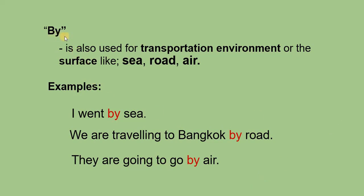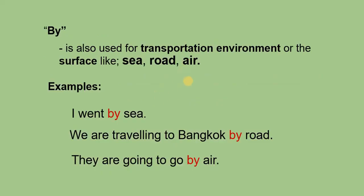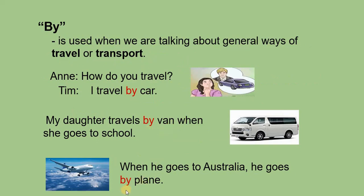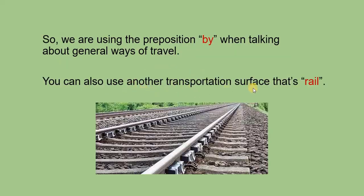We use 'by' when talking about general ways of travel. For example: you travel by car, by van, by plane, and also by sea, road, and air. You can also use another transportation surface — by rail. So 'by' covers general modes of transport including vehicles and travel surfaces.